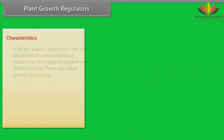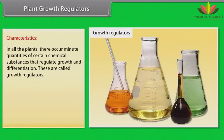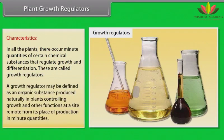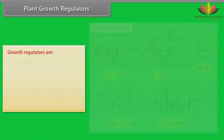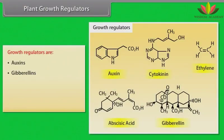Plant growth regulators: a growth regulator may be defined as an organic substance produced naturally in plants, controlling growth and other functions at a site remote from its place of production in minute quantities. These are auxins, gibberellins, cytokinins, ethylene and abscisic acid.